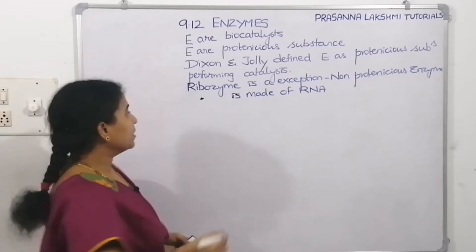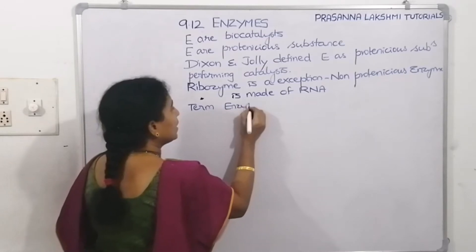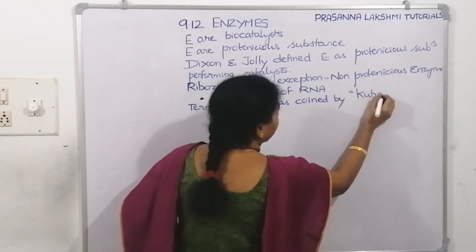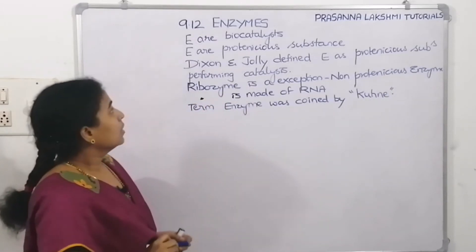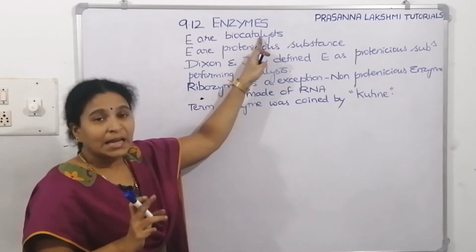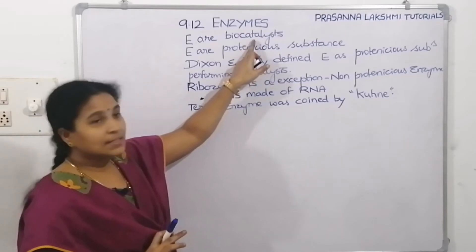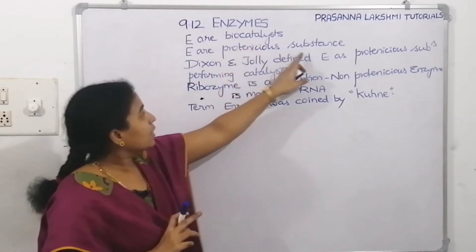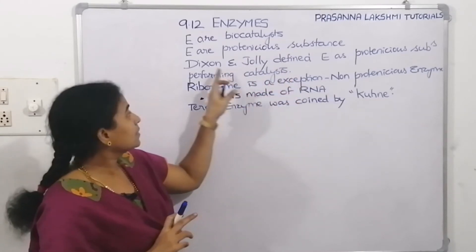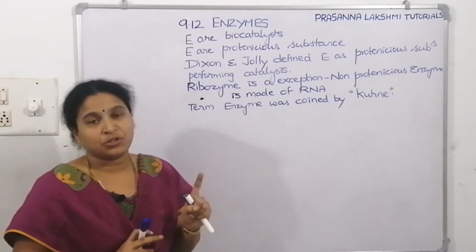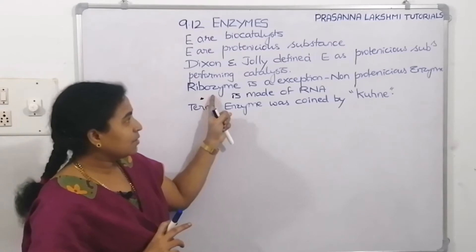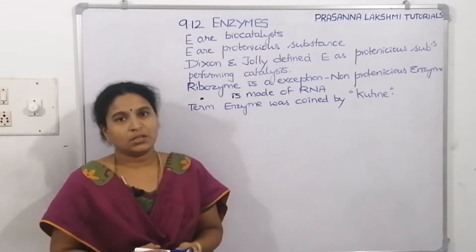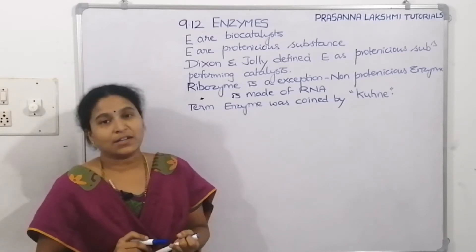The term enzyme was coined by Kühne. To recap: enzymes are biocatalysts — a catalyst is a substance which increases the rate of reaction. Enzymes are not synthesized; they are extracted from living tissue. Their chemical nature is proteinaceous, as defined by Dixon and Jolly. The exception is ribozyme, a non-protein enzyme made of RNA.